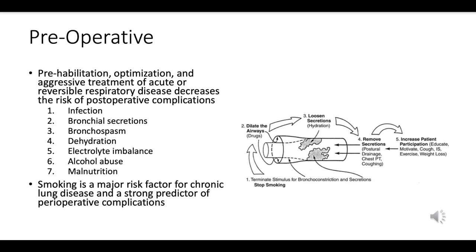Smoking is a significant risk factor for chronic lung diseases like COPD and chronic bronchitis. It impairs the lungs' ability to clear secretions, reduces immune function, and is a significant predictor of perioperative complications including wound infections, respiratory complications, and prolonged hospital stays. Patients should ideally cease smoking at least four to six weeks prior to elective surgery to derive maximum benefit.